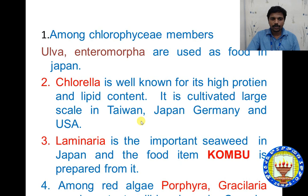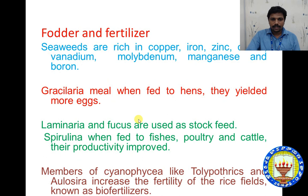Chlorella is well known for its high protein and lipid content. It is cultivated on a large scale in Taiwan, Japan, Germany, USA, and countries like Netherlands, Finland, and Norway. Among red algae, Porphyra and Gracilaria species are used commercially.